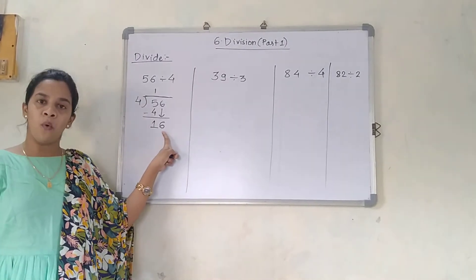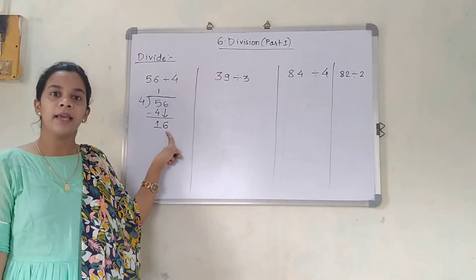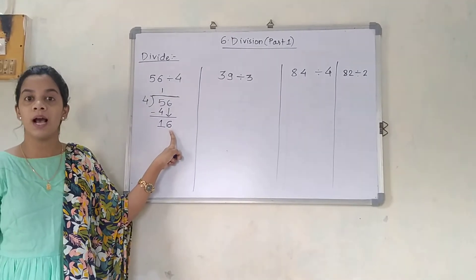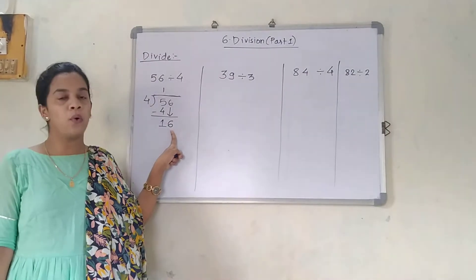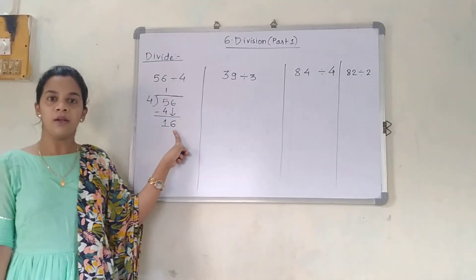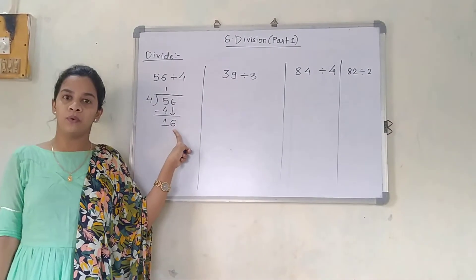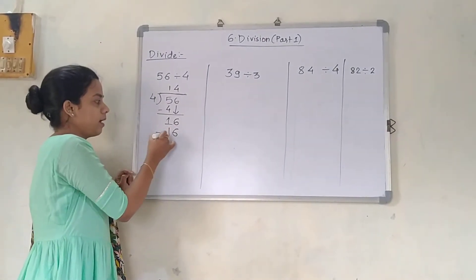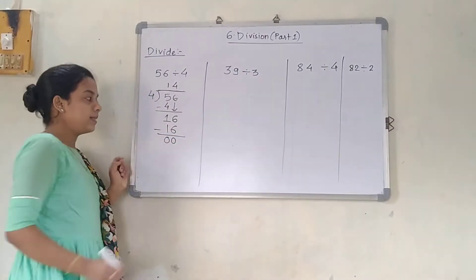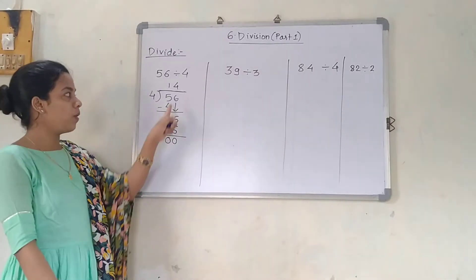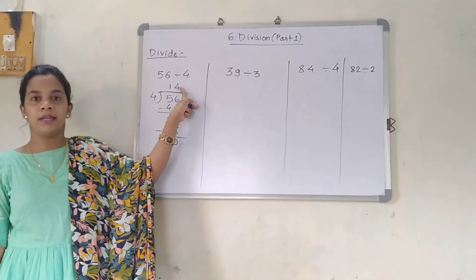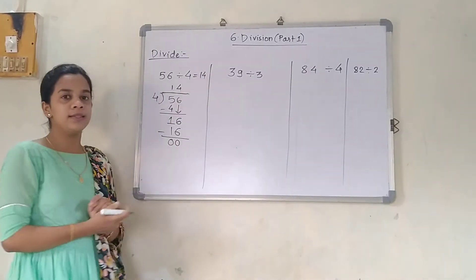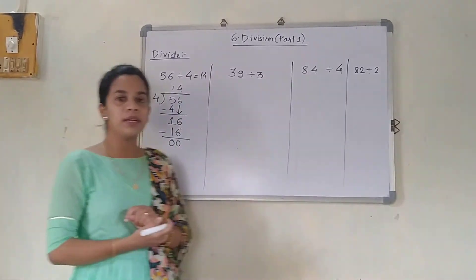Can you tell me — in the 4's table, is 16 coming? Yes. 4 fours are 16. So 4 ones are 4, 4 twos are 8, 4 threes are 12, 4 fours are 16. The remainder is 0, and the main answer — the quotient — is 14. So the answer is 14.